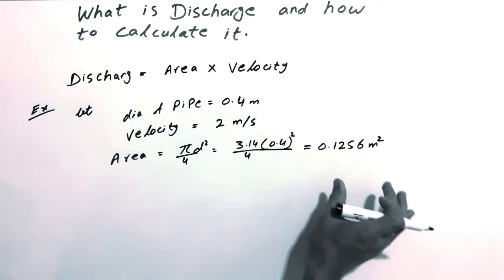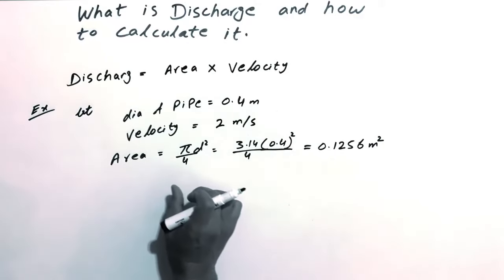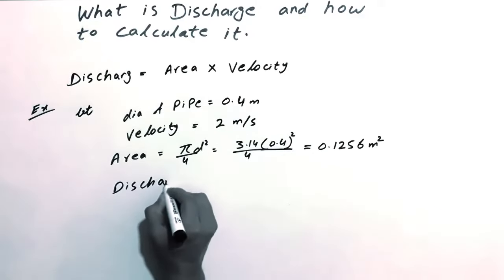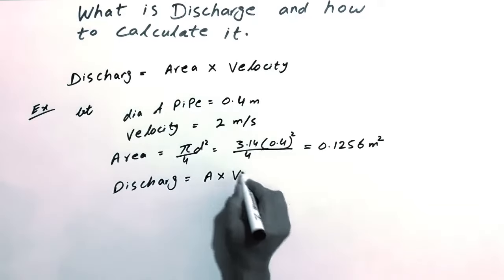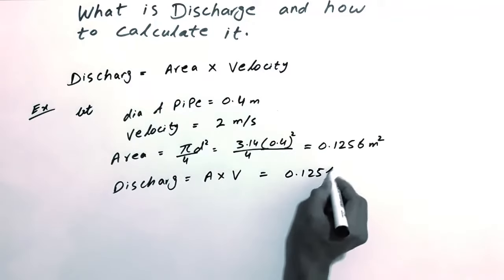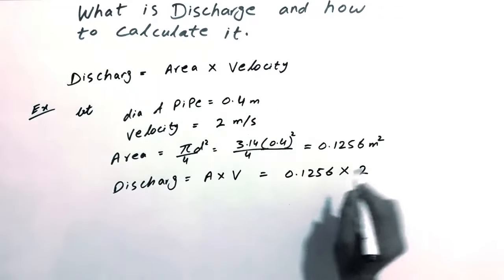Now we have the area, so we need to calculate the discharge. Discharge equals area multiplied by velocity, which is 0.1256 multiplied by 2.